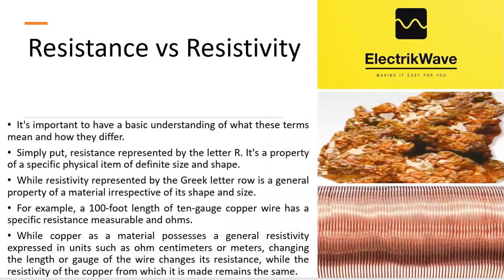In this video, we refer to both soil resistivity and soil resistance to avoid possible confusion. It's important to have a basic understanding of what these terms mean and how they differ. Simply put, resistance, represented by the letter R, is a property of a specific physical item of definite size and shape. While resistivity, represented by the Greek letter Rho, is a general property of a material, irrespective of its shape and size.